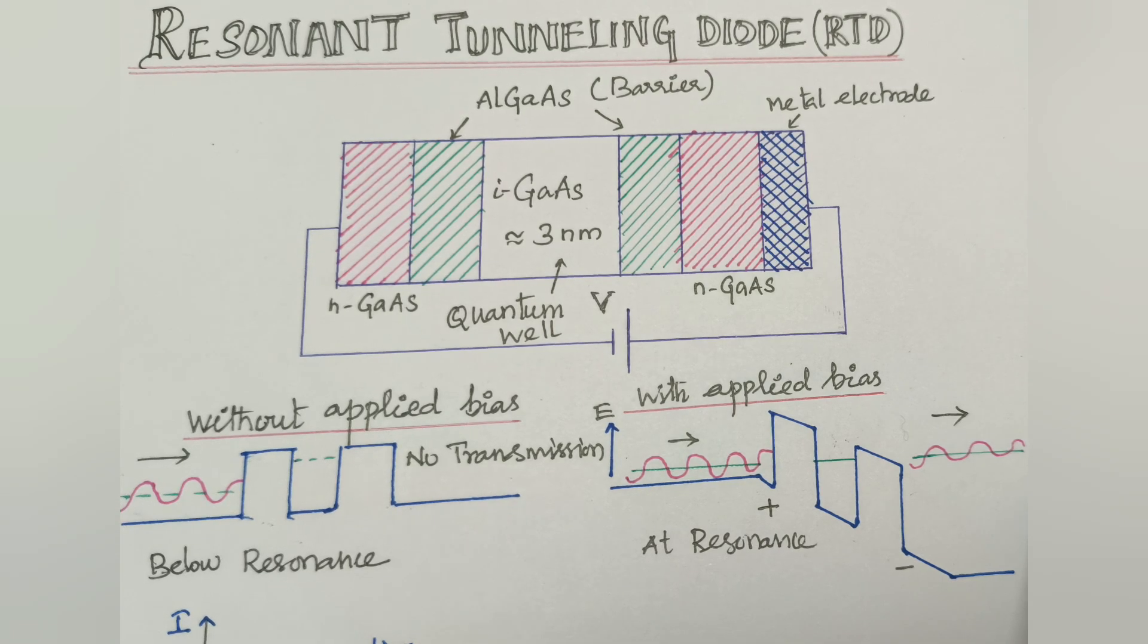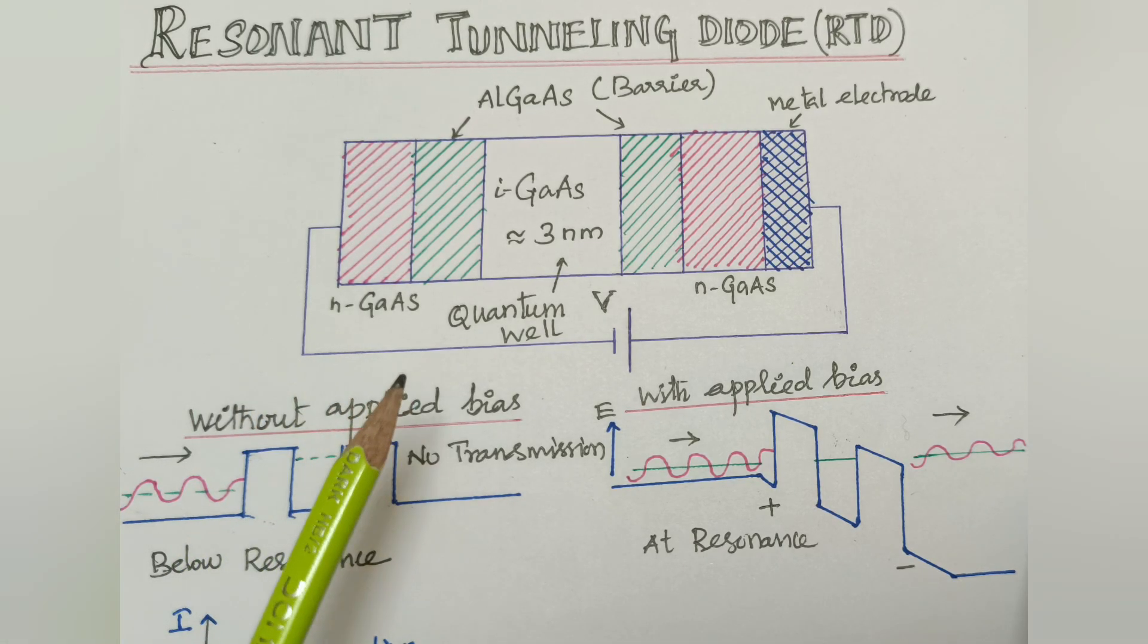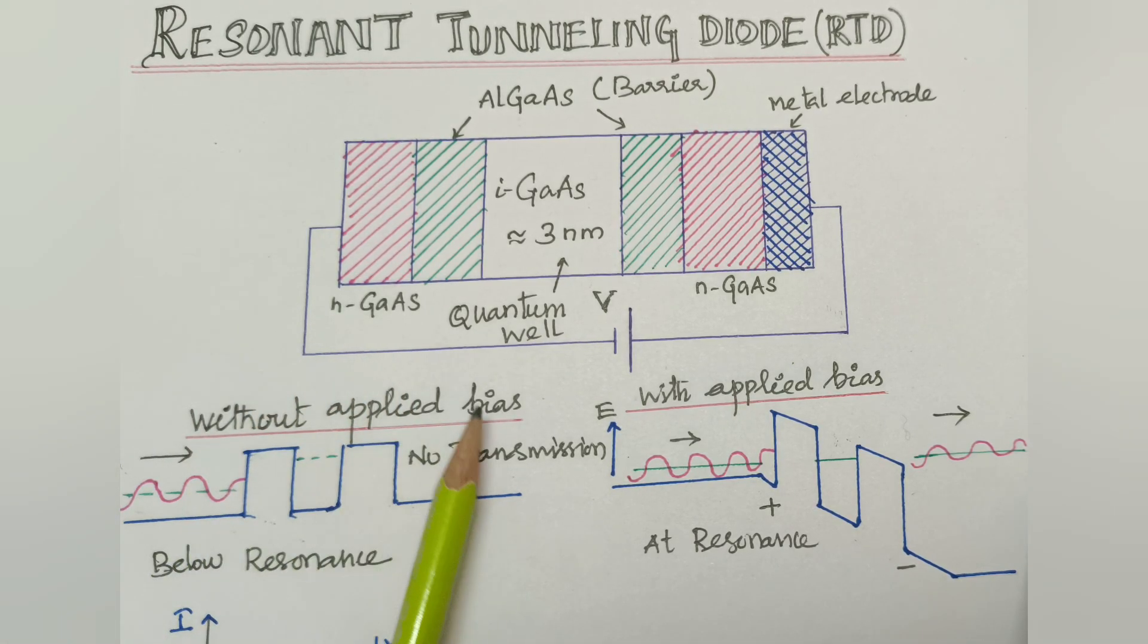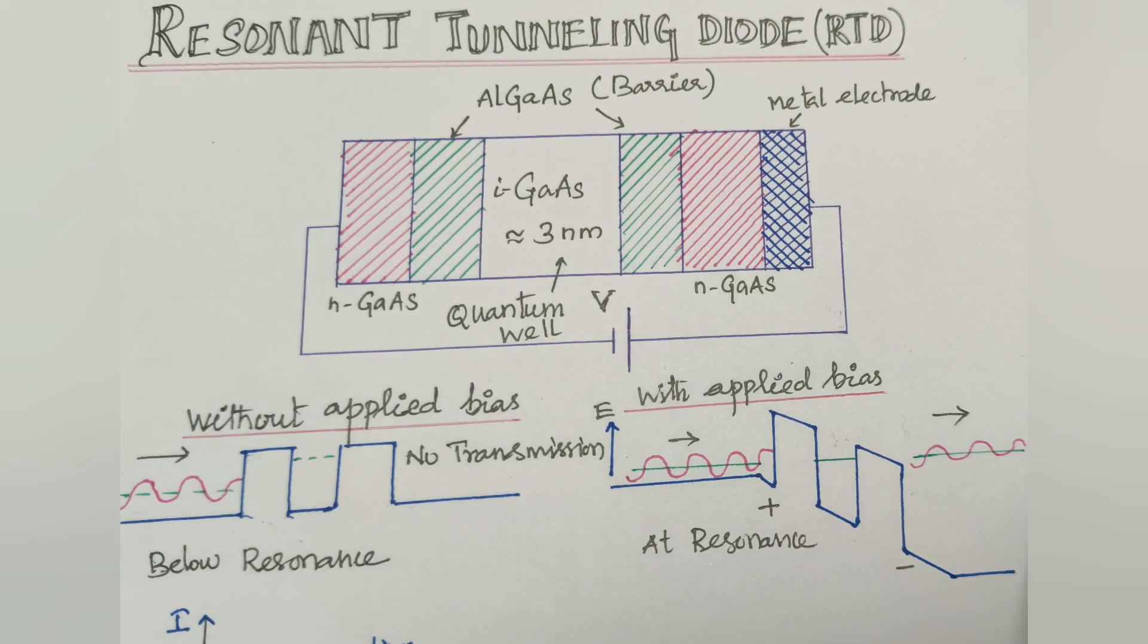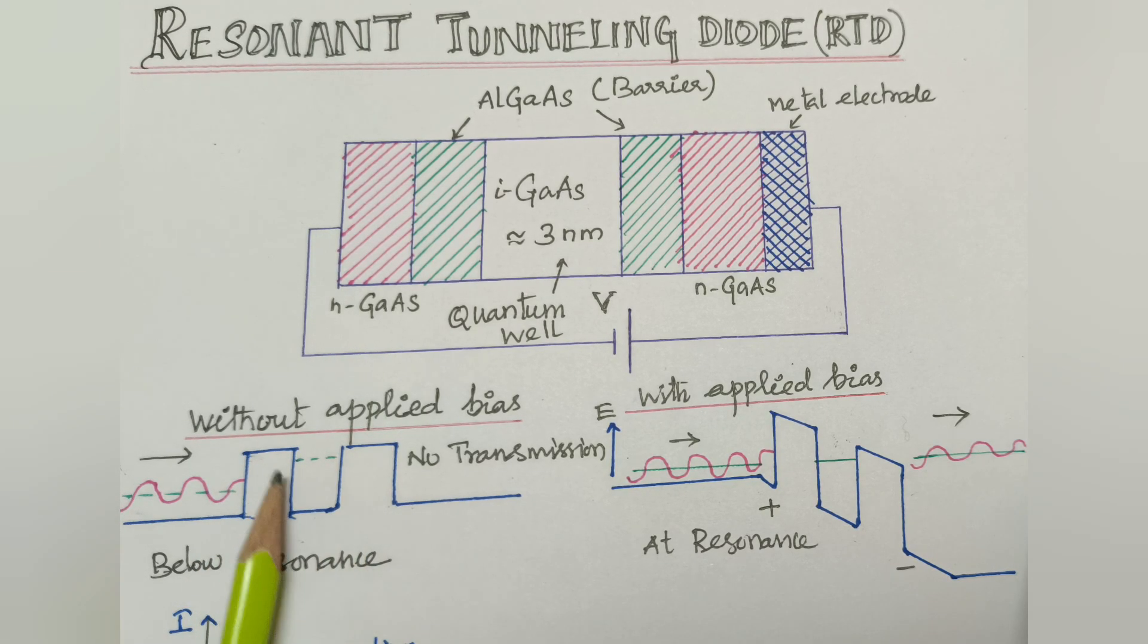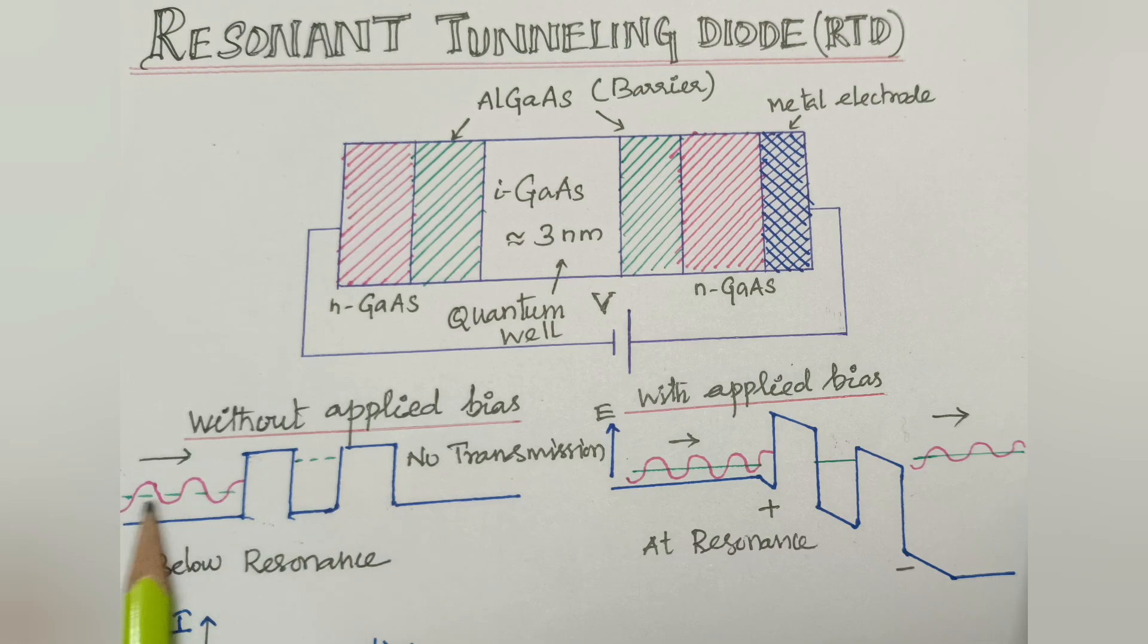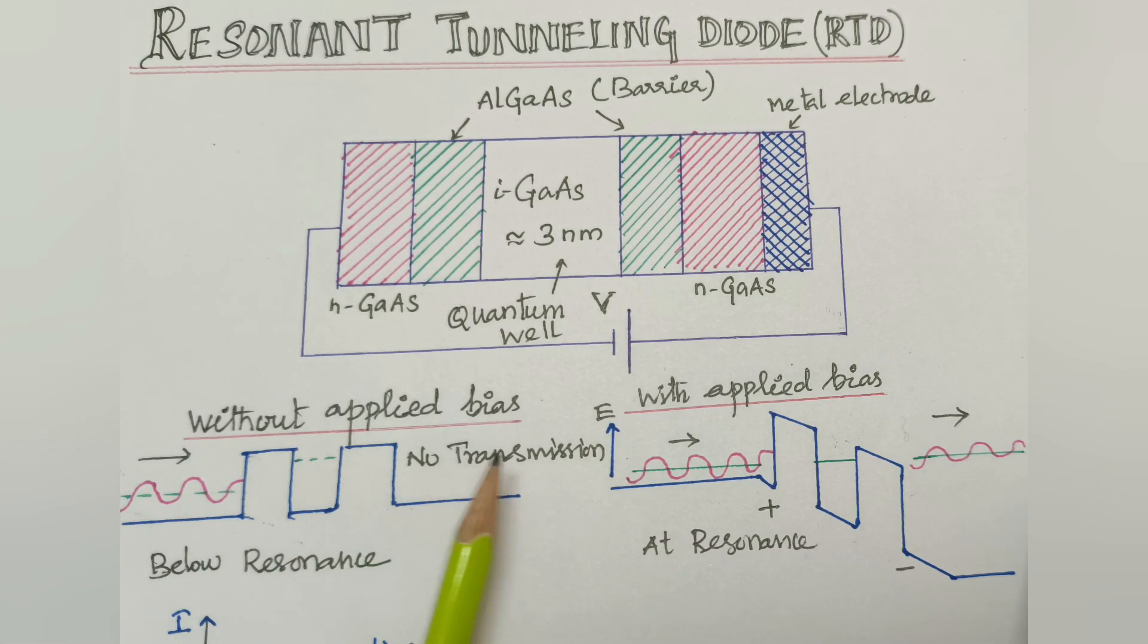Working. Here, the tunneling is controlled by applying external voltage. First one is without applied bias. Here, the energy falls on the potential barrier. It would not be able to transmit through or tunnel through the potential barrier. Why? Because the potential energy of quantum well is high. Here, the resonance condition is below the energy. The energy is low when compared to potential energy. So it would not be able to tunnel through this potential barrier. So there is no transmission.